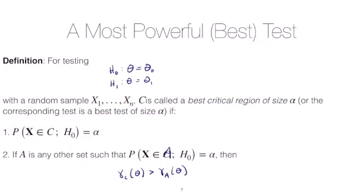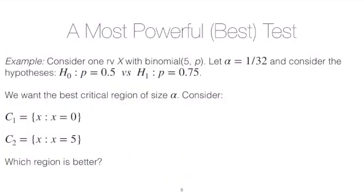So this says just what we sort of reasoned through before. You've got two tests of size alpha, and one of them is better just in case it has a higher power. Now let's look at an example in context.